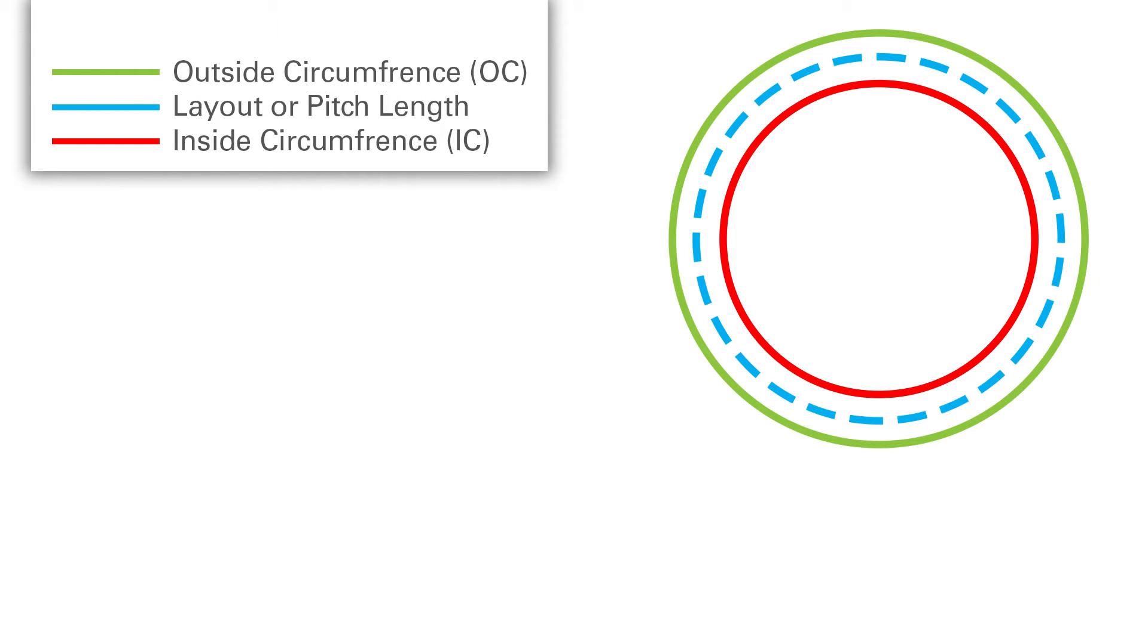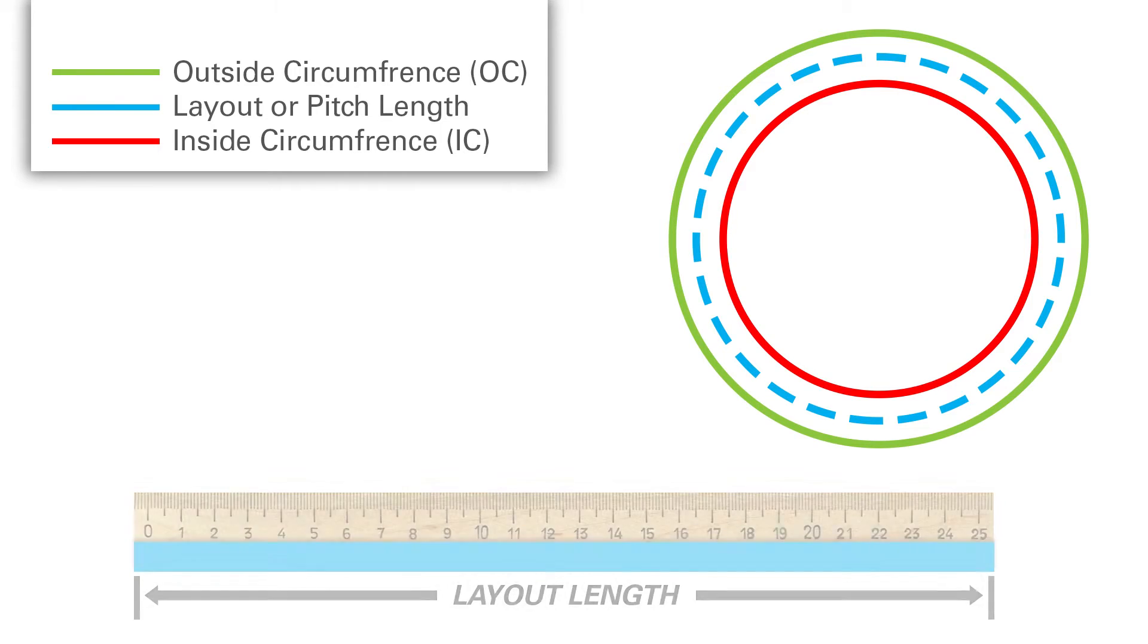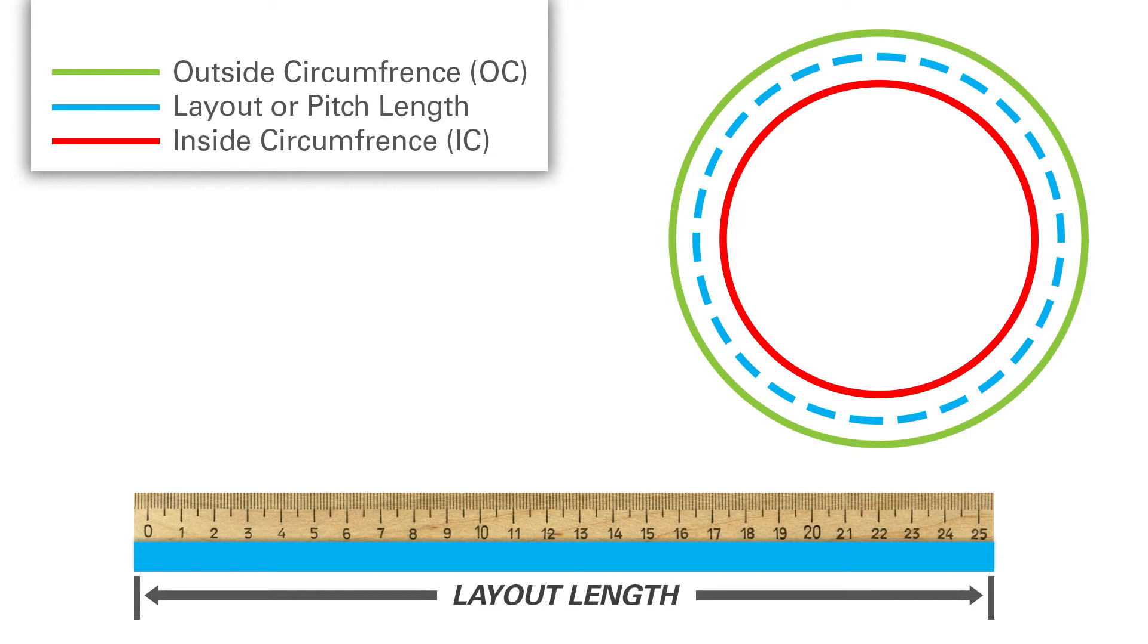There are terms that need to be defined so that measuring a belt can be performed properly. When a belt is laying flat on a table, the length of the belt can be easily measured, and this is what's known as the layout length. Or, when this belt is made endless, it is the net endless length.